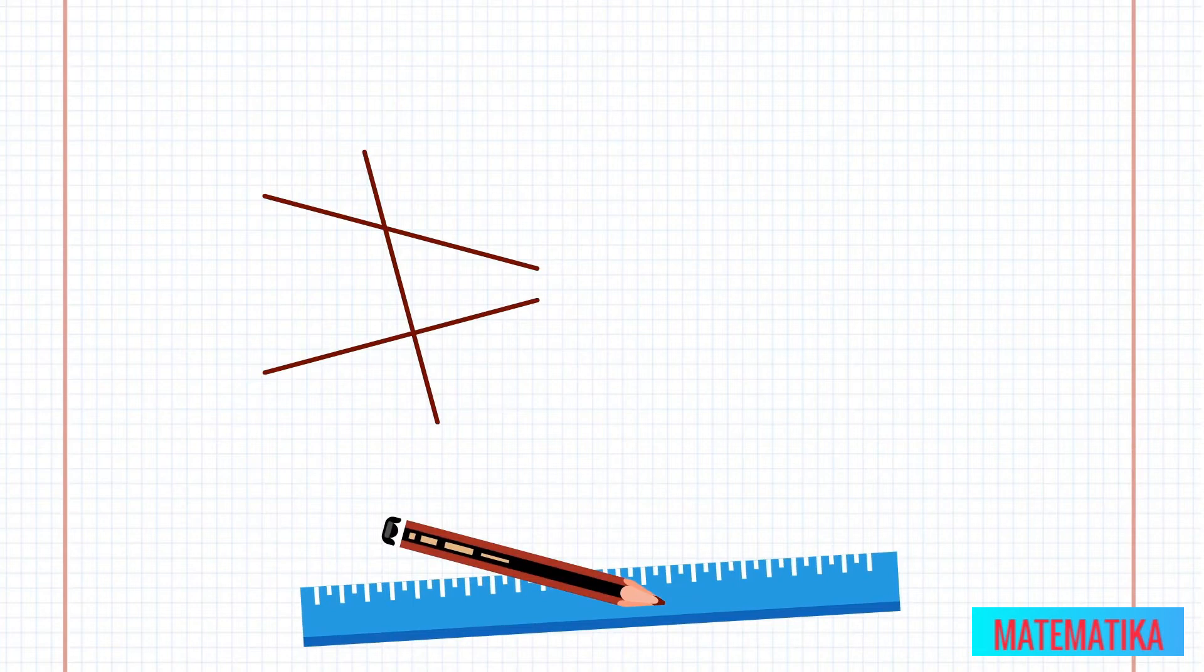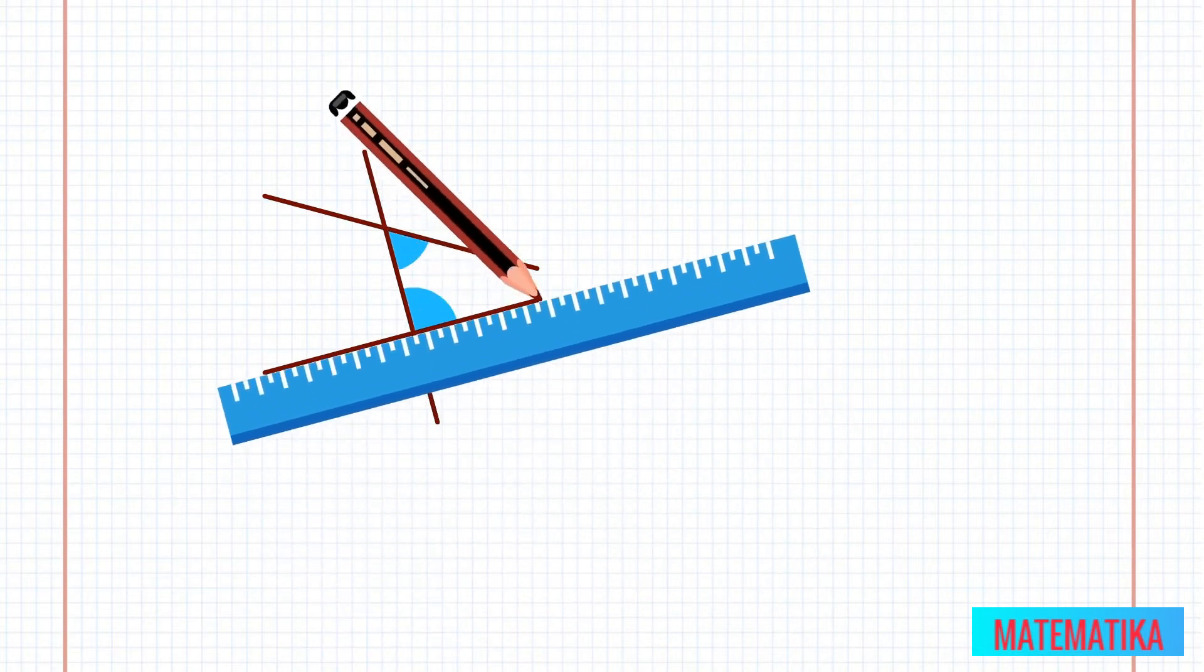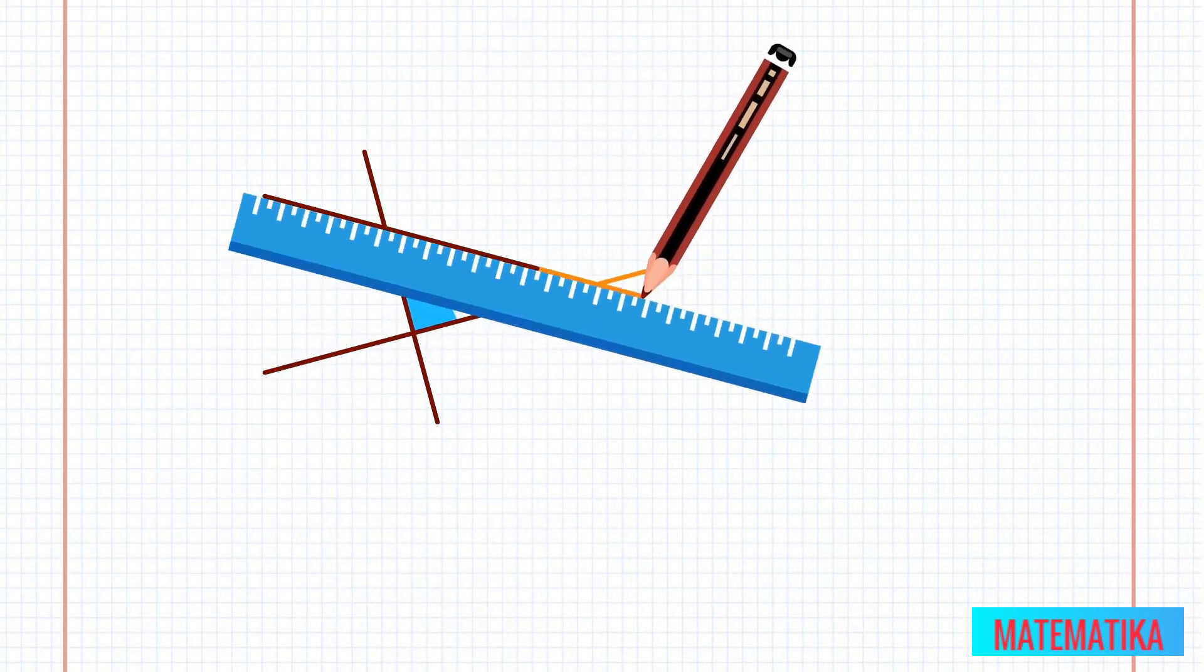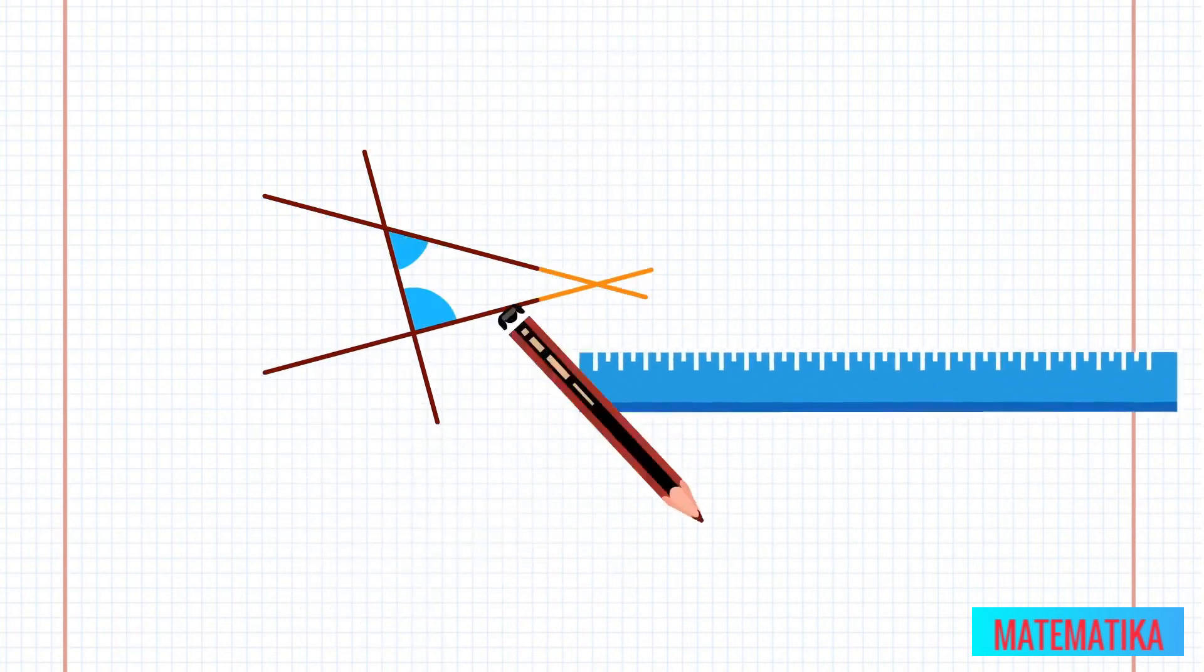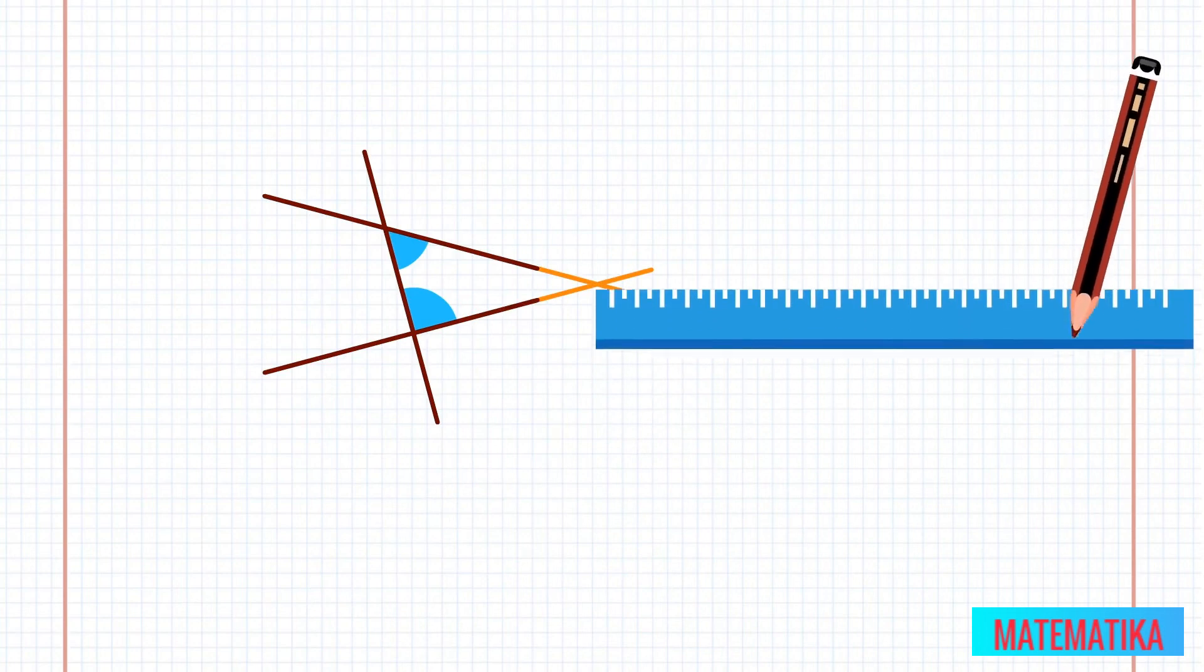If the two interior angles on the same side add to less than 180 degrees, the drawn lines will, if they continued, meet. Try it, see if they will meet. Now start again, but this time draw two parallel lines.